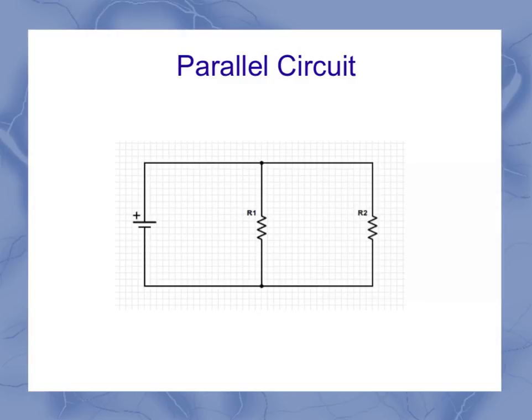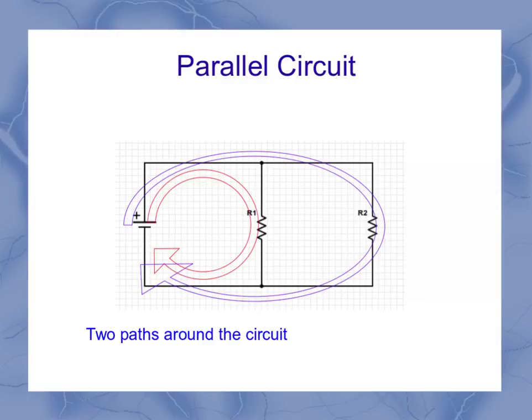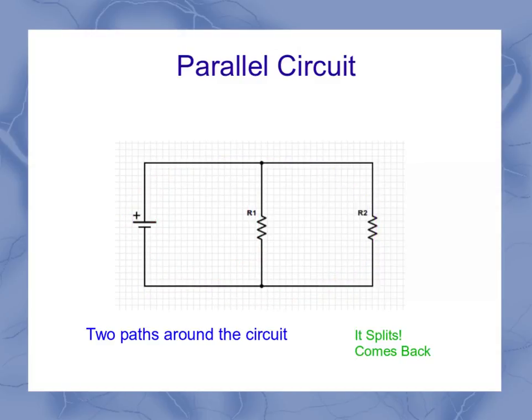In a parallel circuit, there's two paths around the circuit, one going through resistor one and one going through resistor two. But the key that we're looking for is at some point, in this case up here, it splits off, and then those two paths come back together at a second point.